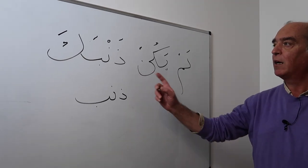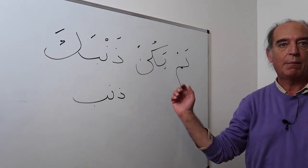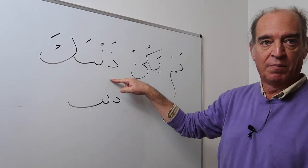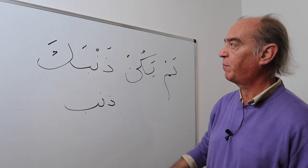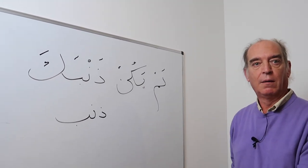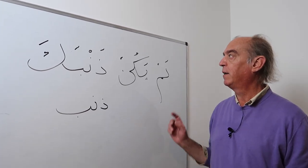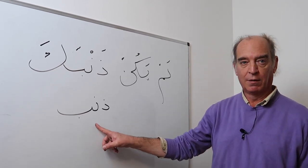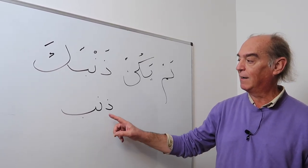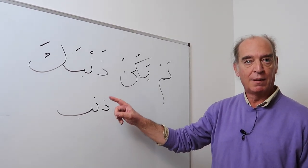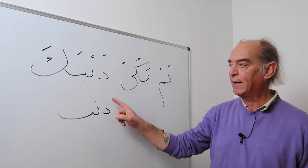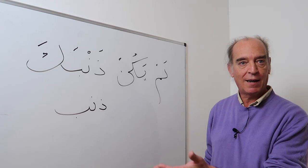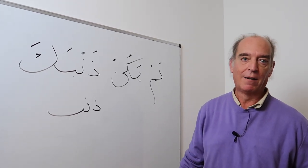Further example: lam yakun zanbaka — it was not your fault. If speaking to a woman, you would say lam yakun zanbaki. Pay attention: zanb with sukun means fault, while zanab means tail. So if you say lam yakun zanabaka, you mean 'it was not your tail,' which doesn't mean anything.